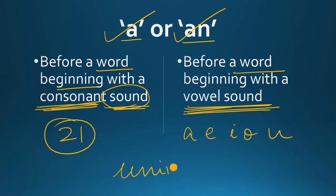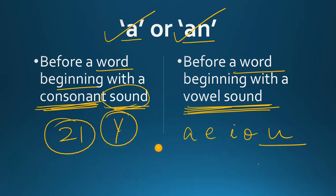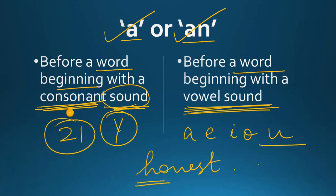For example, the word 'university'. Now, university begins with a 'U' which is a vowel, पर इसका sound क्या है? 'Your' sound — Y का जो sound होता है — and this is a consonant sound, that's why we say 'a university'. Similarly, 'He is an honest man.' Now, 'honest' word starts with H, H is a consonant, पर इसका sound क्या है? 'Honest' — ओ sound आ रहा है, which is a vowel sound, and so we say 'an honest person'.